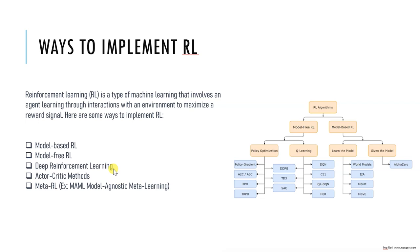Next is deep reinforcement learning. This approach combines neural networks with reinforcement learning to learn complex policies from high-dimensional data or input. It is a type of RL that uses deep neural networks to represent policies or value functions. One of the types is the Deep Q-Network, which we will be majorly using in further tutorials to see how the agent works.